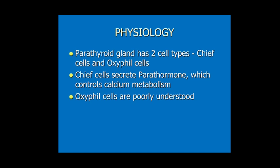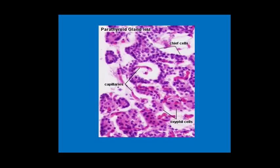Regarding physiology, the parathyroid gland has two types of cells: chief cells and oxyphil cells. Chief cells secrete parathormone (parathyroid hormone), which controls calcium metabolism. Oxyphil cells are poorly understood and have no clearly defined function. Oxyphil cells are slightly larger compared to the chief cells.